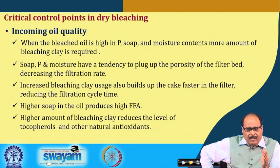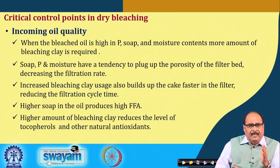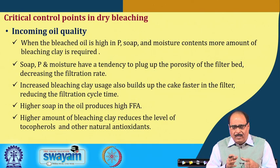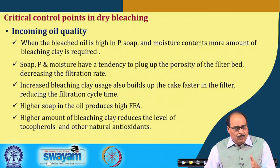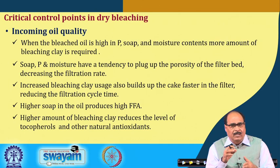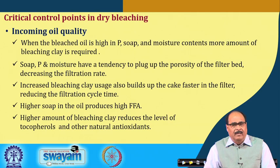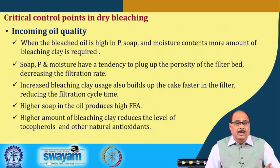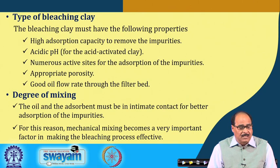Critical control points in the dry bleaching process include the quality of incoming oil. If the oil is high in phosphorus, soap, or moisture, more bleaching clay may be required. Soap, phosphorus, and moisture tend to plug the porosity of the filter bed, reducing filtration rate. Higher soap produces higher free fatty acids and higher bleaching clay usage. However, excess bleaching clay reduces tocopherols and other natural antioxidants, so the amount of bleaching clay must be properly optimized.